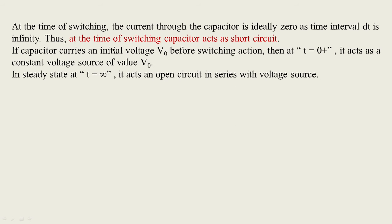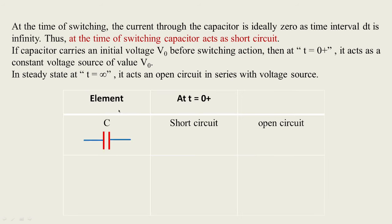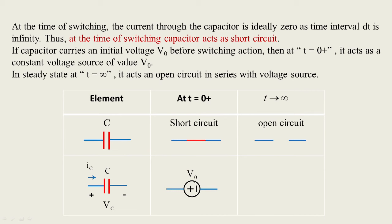You can see element C: under short circuit conditions at t = 0+, and as t tends to infinity the open circuit condition applies. If the capacitor is initially charged with vc, it will behave as a constant voltage source at t = 0+. As t tends to infinity, you can assume the voltage source is in series with an open circuit condition. This is how the transient behavior of a capacitor is understood under steady state and transient analysis.